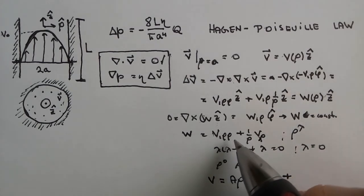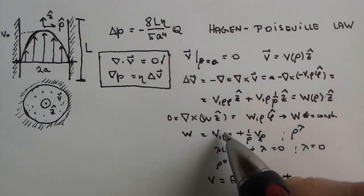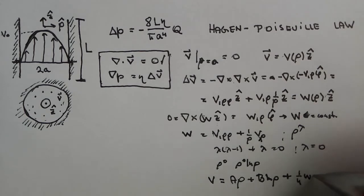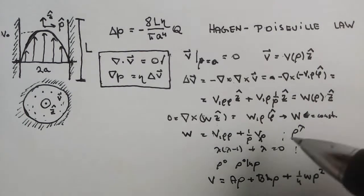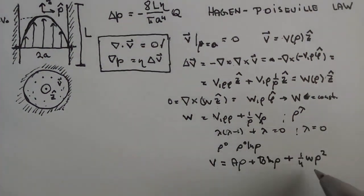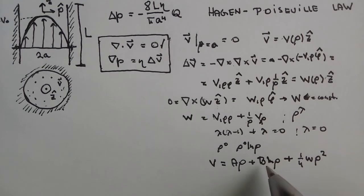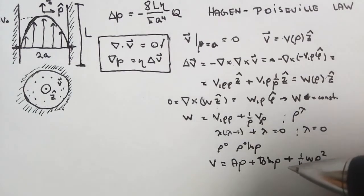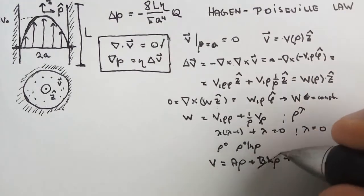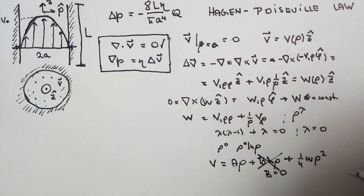We can guess a particular solution. If we substitute rho² into the equation, d²/dRho² gives 2, and (1/rho)*d/dRho gives 2*rho/rho = 2, so together we get 4. Therefore (1/4)*W*rho² is a particular solution, giving W on the right-hand side. For the logarithmic term: if B is not zero, the flow has a divergence — a singularity at the origin — which is unphysical, so we set B = 0.